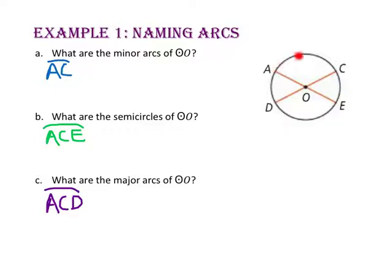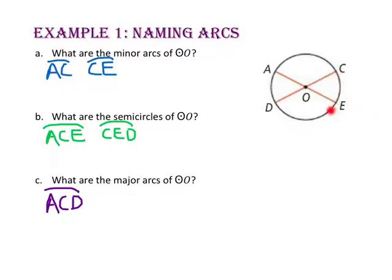If we start at point A and pass through points C, E, and D, we're back to point A. So now we want to move and start with the arcs that begin with point C. From point C to point E, we have a minor arc — it is less than 180 degrees, so arc CE is a minor arc. Starting at point C, passing point E and moving on to point D, we have exactly 180 degrees, so arc CED is a semicircle. Starting again at point C, passing points E and D, moving on to point A, we have a major arc because it is greater than 180 degrees, so arc CEA is a major arc. If we start at point C and pass points E, D, and A, we're back to point C.